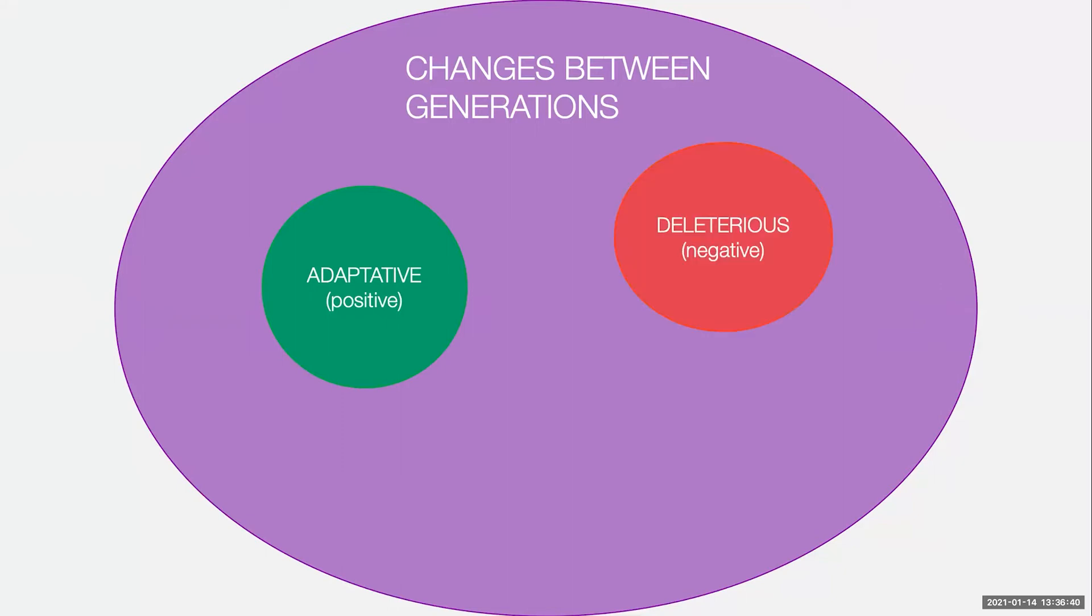They can also be negative, deleterious. We tend not to see these in viruses so much because by the time that the virus has been sampled, the viruses with deleterious mutations have usually already been outcompeted by fitter viruses. But just to kind of have it as a full picture.